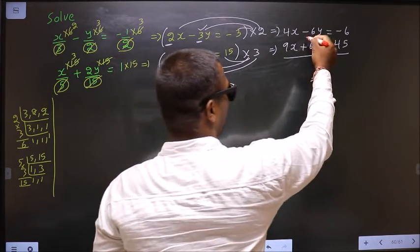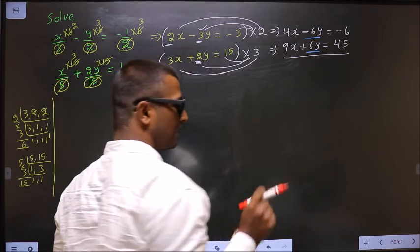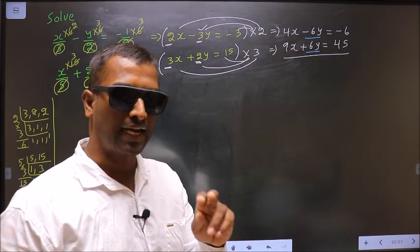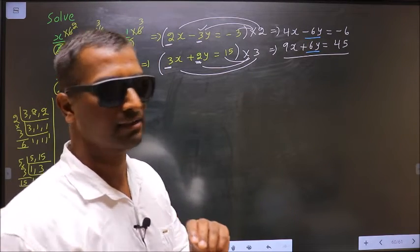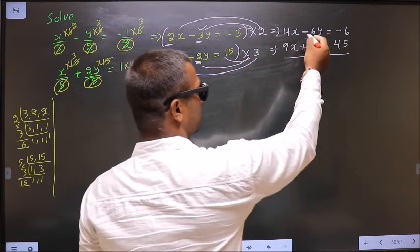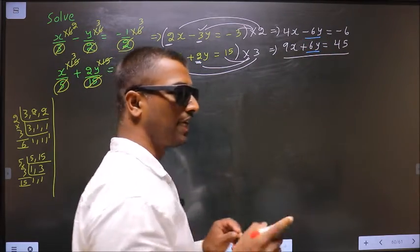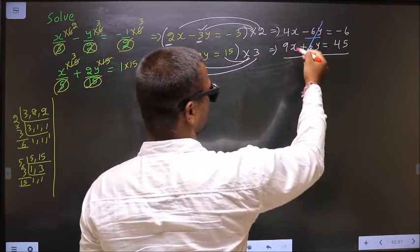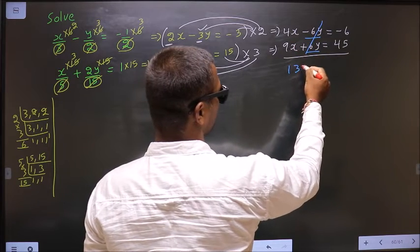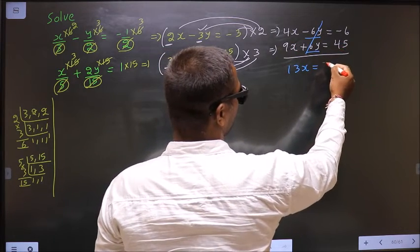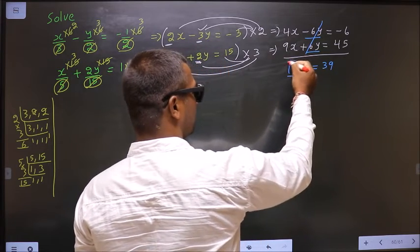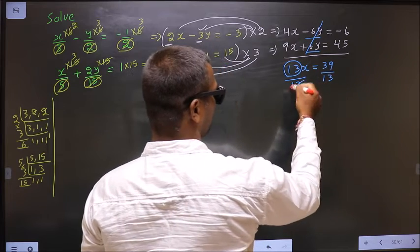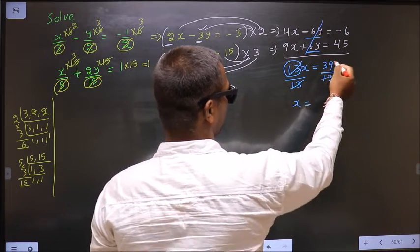Okay, now. I have made y coefficient same only to cancel them out. So now you should decide, by adding do they cancel out or by subtracting. Here it is minus 6 and here it is plus 6. So if I add they cancel out. So when I add, 4x plus 9x is 13x. Minus 6 plus 45 is 39. So now to get x, I should remove 13. For that divide by 13 on both sides. So I get x equal to 3.